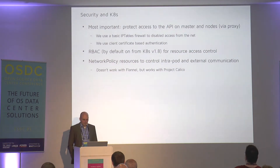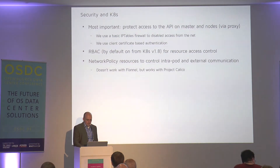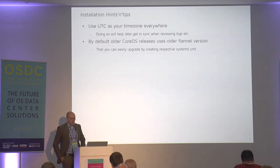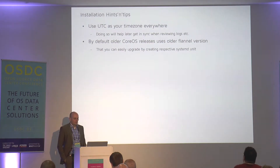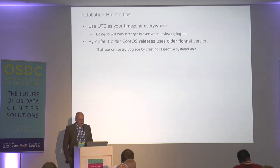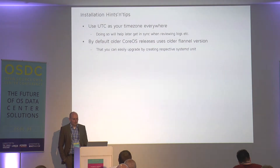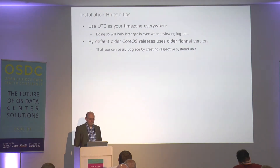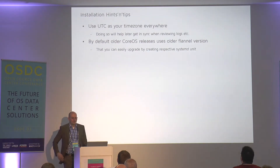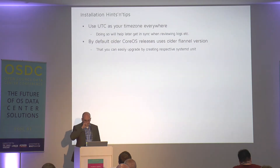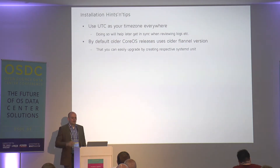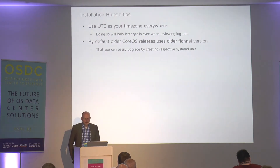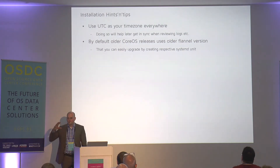For authentication we use client certificates. Some installation hints and tips: we found that using UTC as the timezone is pretty good on the machines — true for almost all server environments, and also for CoreOS. By default, all CoreOS releases use an older version of Flannel. You can upgrade this pretty easily by editing the respective systemd unit.